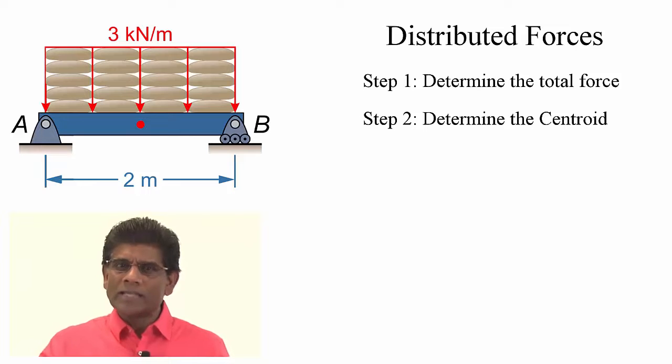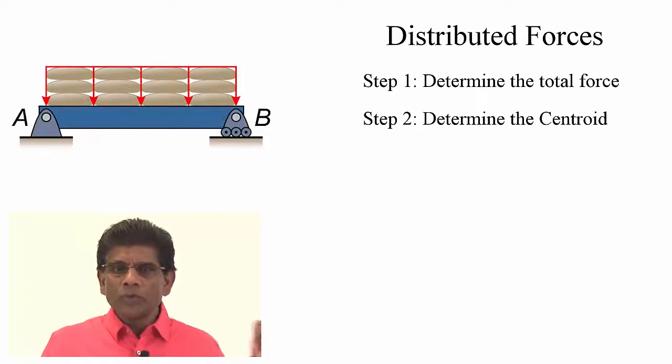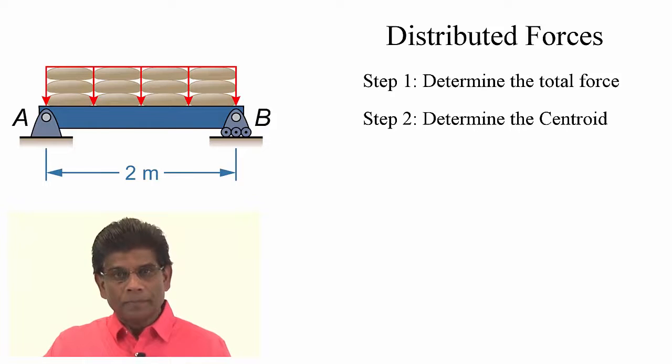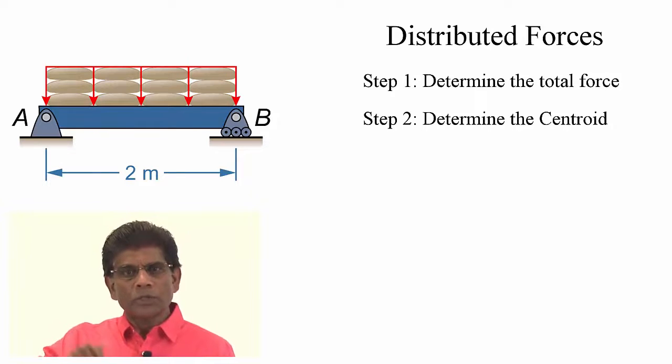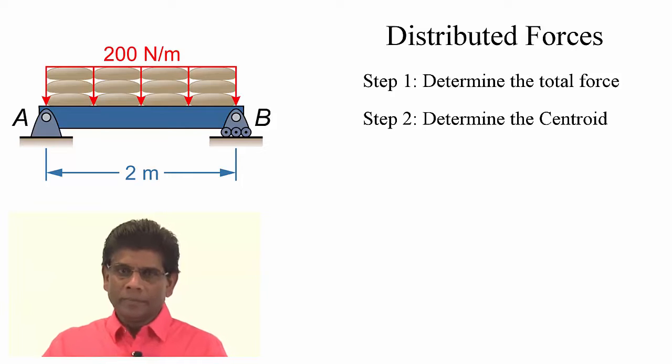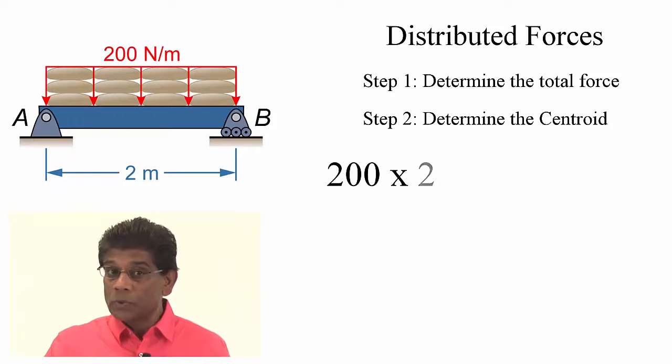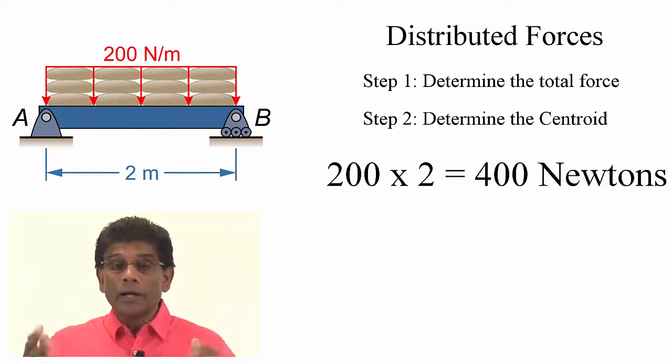That's it. Let's look at this example, where we have a uniformly distributed load on a 2 meter long beam. The intensity of the force is 200 newtons per meter. The area under the loading curve is the total force and it is equal to 200 times 2 equaling 400 newtons.